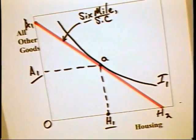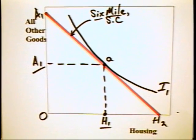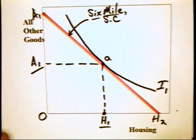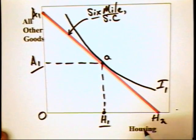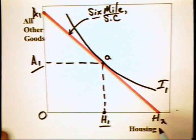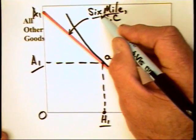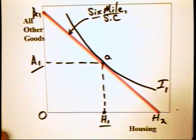We can deal with this issue by going to a graph such as this one, in which we have put the cost of all other goods on the vertical axis and housing on the horizontal axis. We do this simply because housing is a key consideration in relocating a worker. We're going to relocate a worker from Six Mile, South Carolina, where housing costs are very low. Housing costs are, we will assume, all that is different between the two areas.